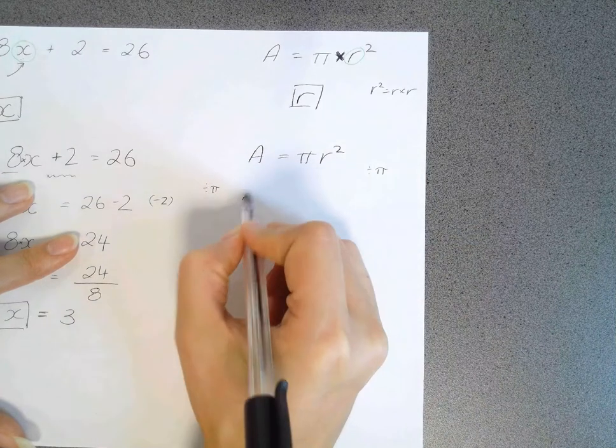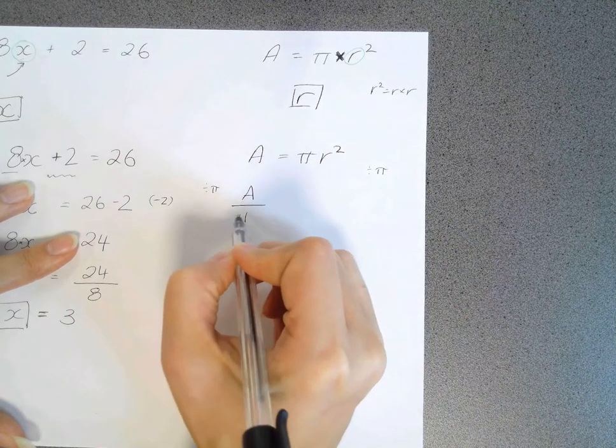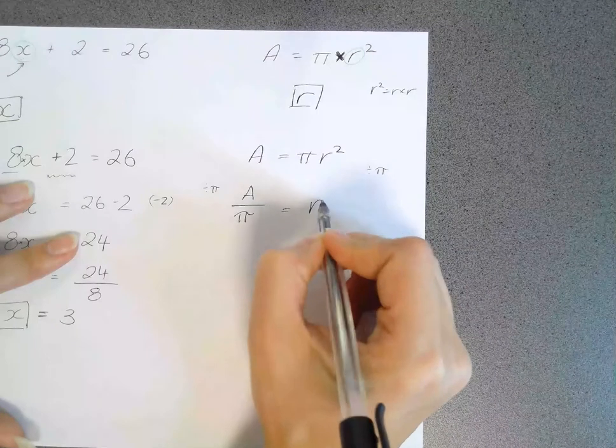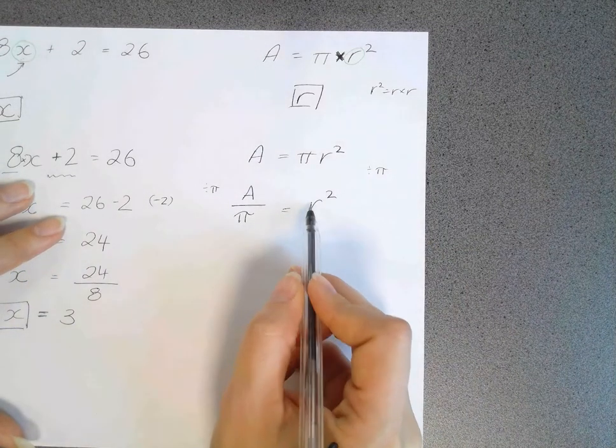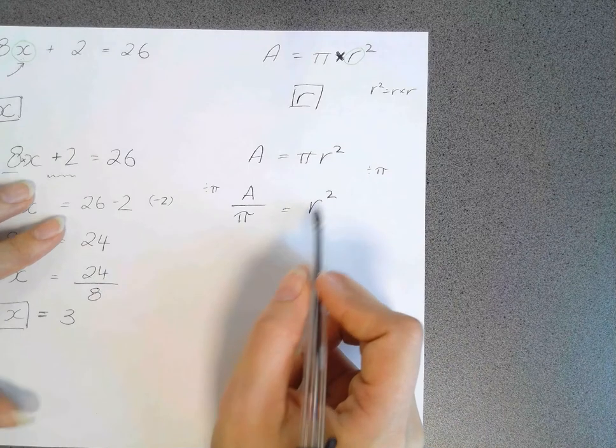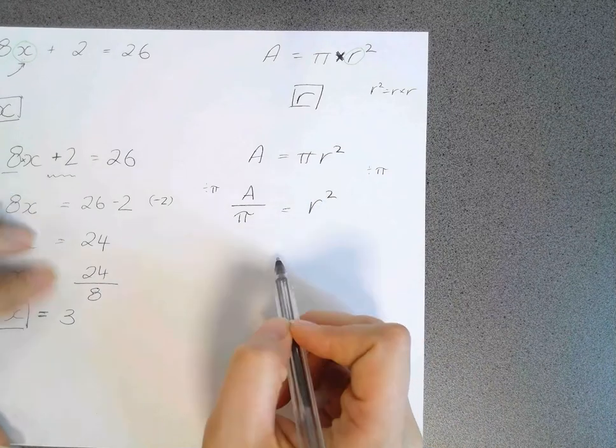So then on this side we will have A divided by pi is equal to all that's left is the r squared on that side. So then we've got to get this r squared to just be r.